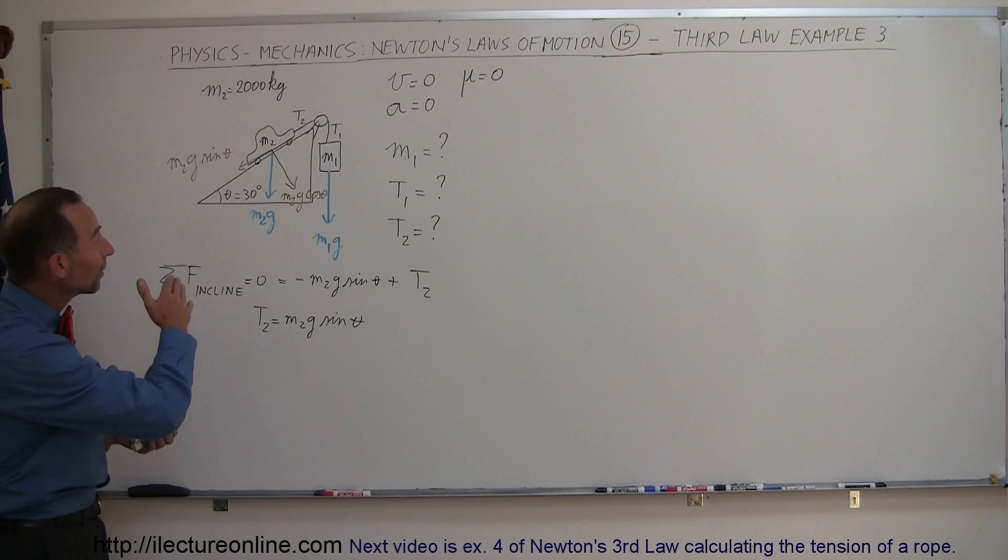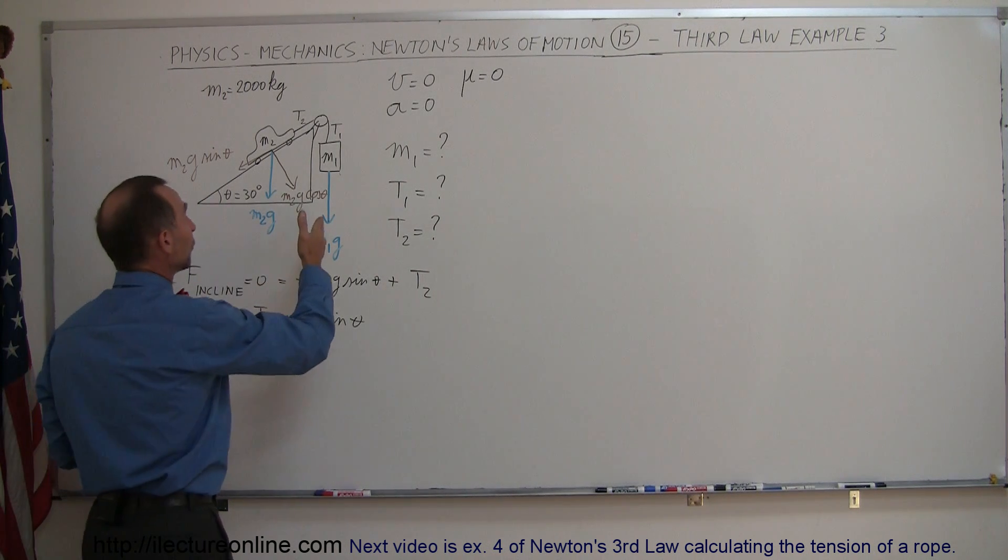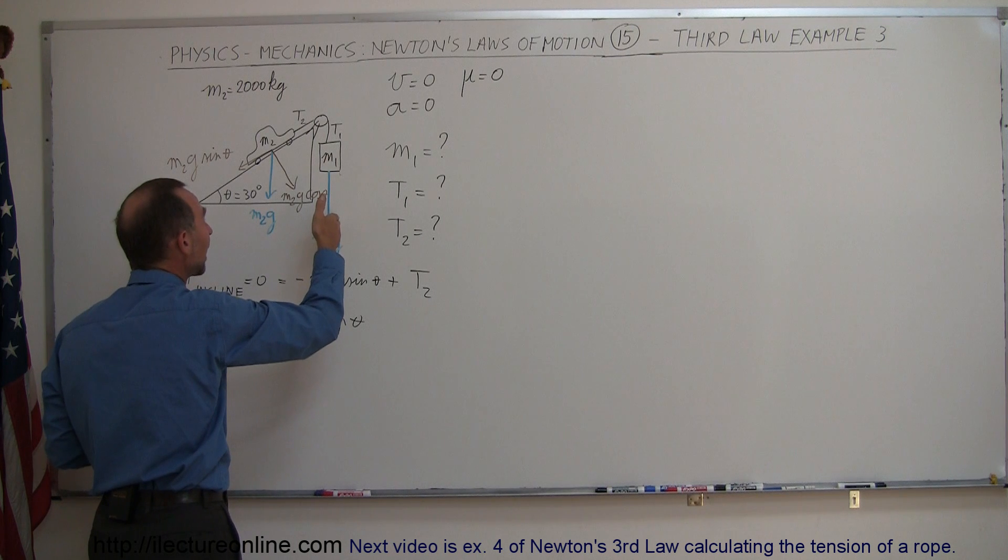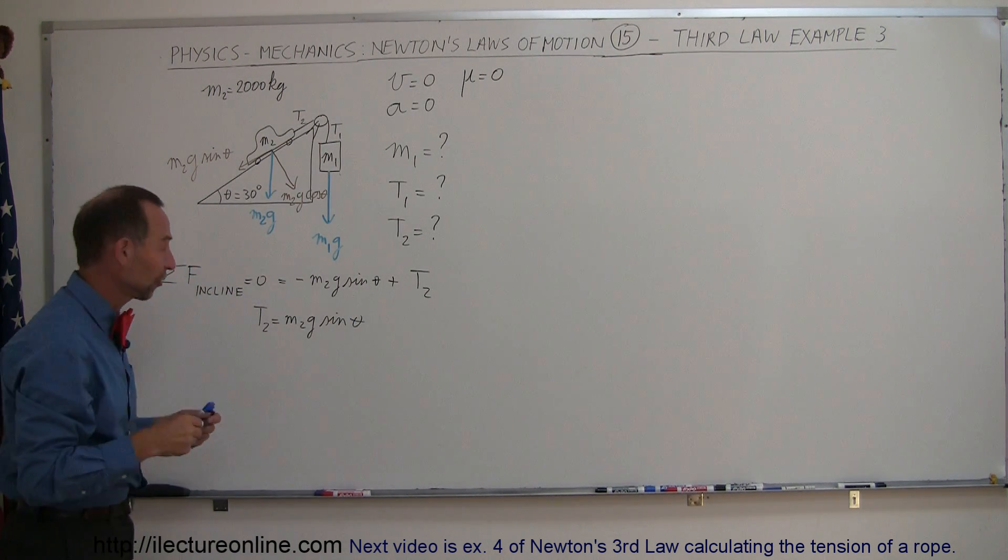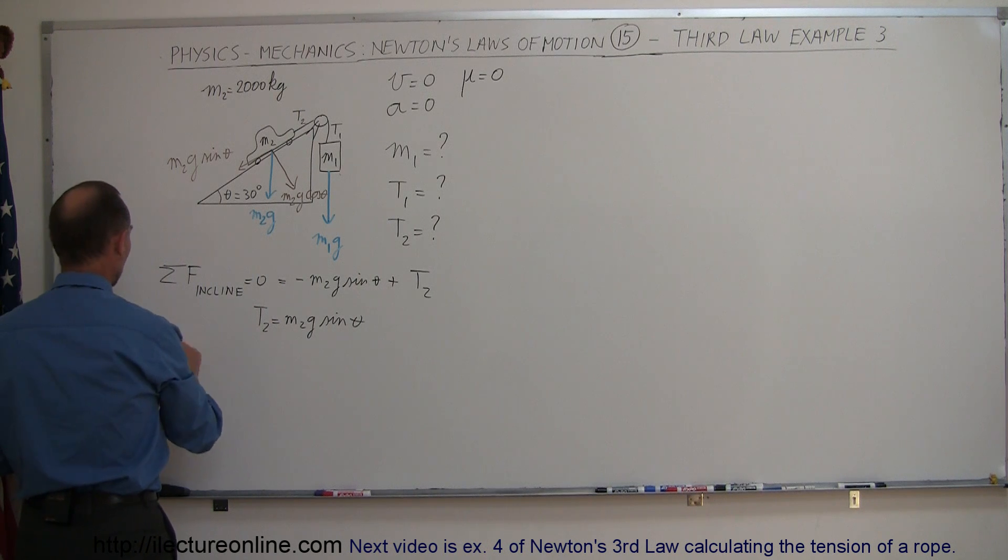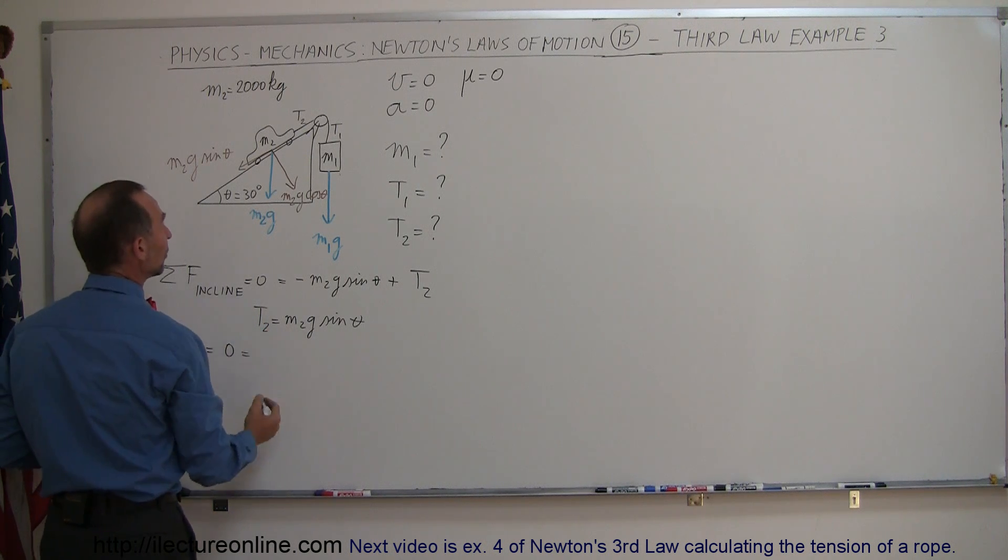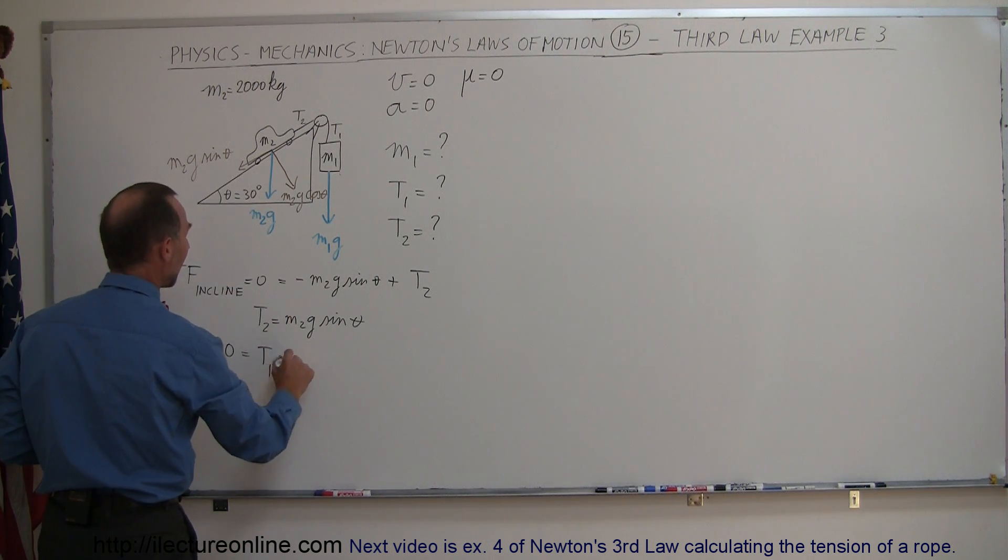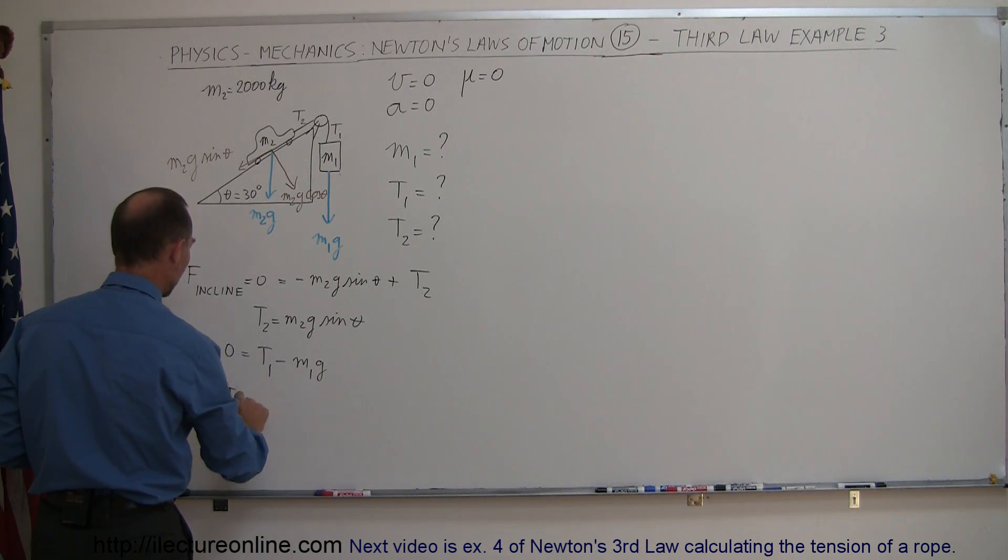We can do the same with the weight hanging on the other side. The only two forces acting on this weight, in the vertical direction, is the M1G acting downward and tension 1 acting upward. Again, we can therefore say that the sum of the forces in the Y direction on M1 is equal to zero, which is equal to T1, which is positive, minus M1G, which is negative, which means that T1 equals M1G in magnitude.